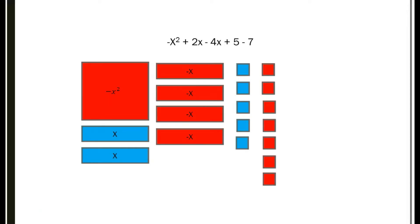Now what we want to do is combine like terms, and I'm going to put a line right there. Everything that comes on the right-hand side of the line, we're going to use a method called zeroing out — that's the method we used when we did adding and subtracting integers. So if you don't know how to do that method, go back and watch that video. A positive and a negative will become a zero — that's what we're going to do for each of these variables.